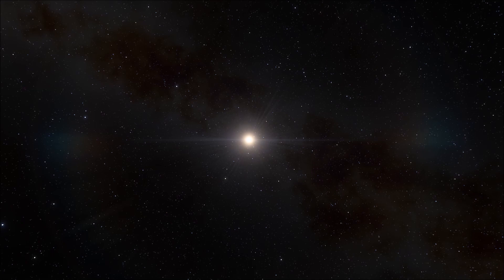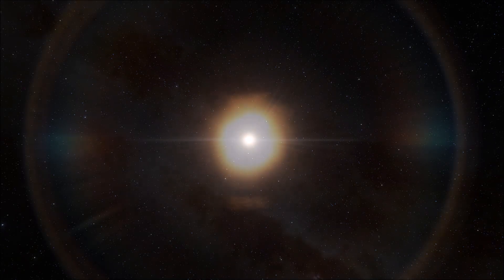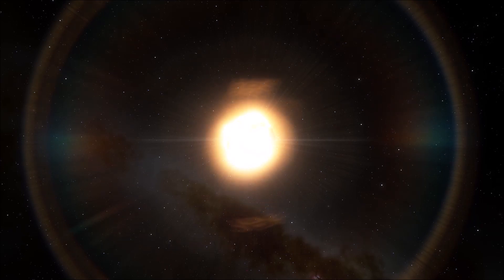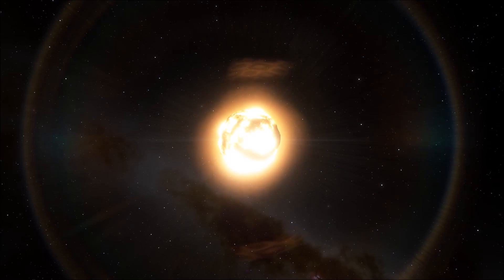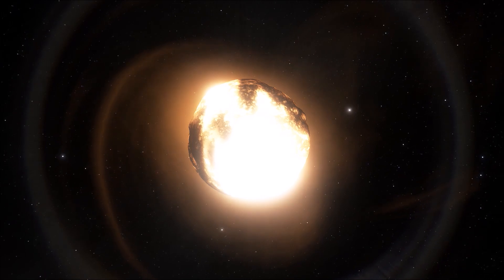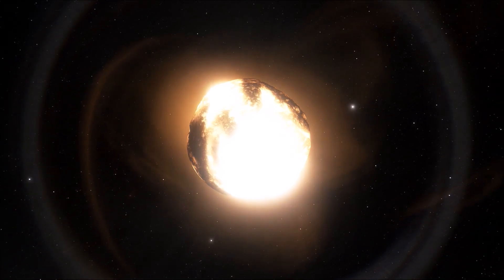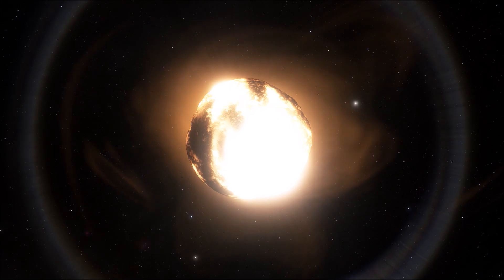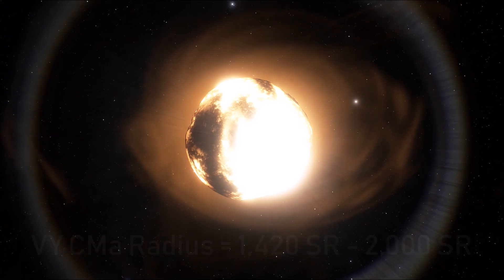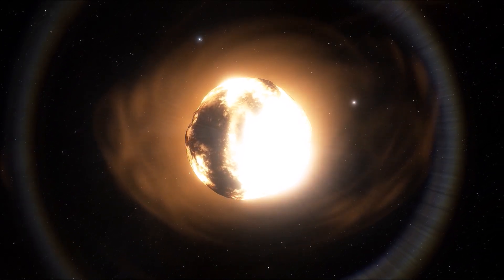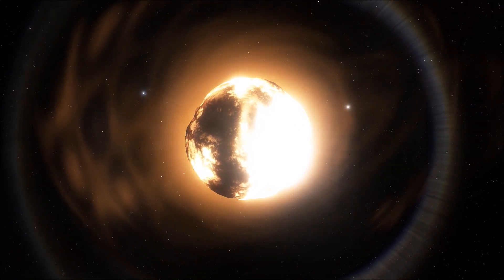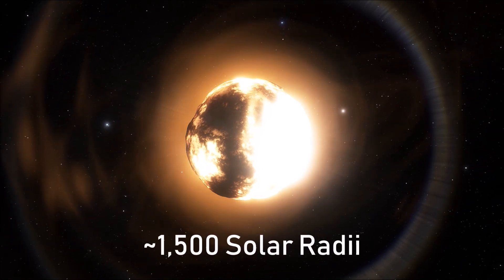While estimates of its size have also had well-defined margins of error, we have managed to refine the estimates down considerably in recent years. Initial estimates when it was first discovered put the star at over 3,000 times larger than the diameter of the sun, but this has since been re-examined, and the boundary now sits between 1,420 solar radii to 2,000 solar radii, which is still quite a wide margin. The 2,000 solar radii estimation is probably a bit optimistic, and so it's likely that VY Canis Majoris is much nearer the 1,500 solar radii mark.